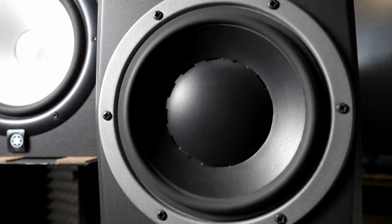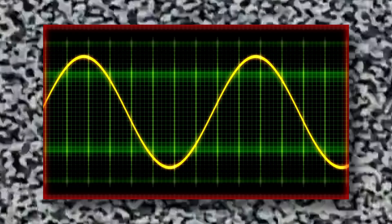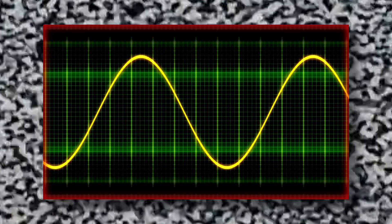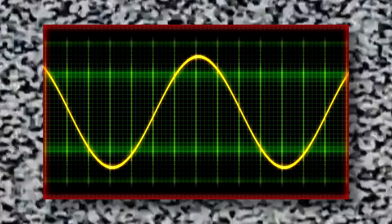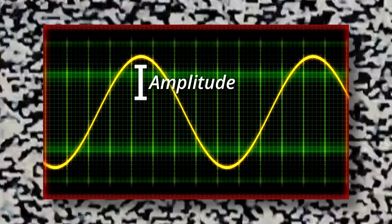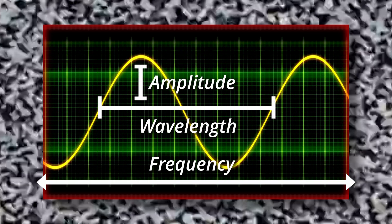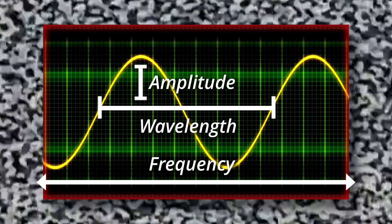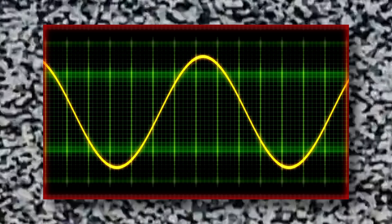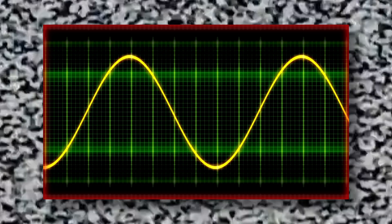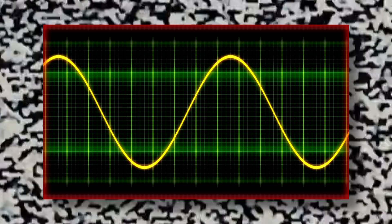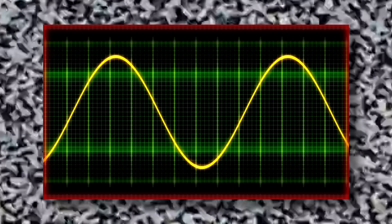Sound waves can propagate through solids or liquids, but most frequently we're perceiving them traveling through the air to our ears. This graph is a pretty typical way of representing a sound wave. It shows us lots of things like the amplitude, wavelength, and frequency, but also very importantly, we can see that there are areas of high pressure and low pressure represented by the peaks and troughs.